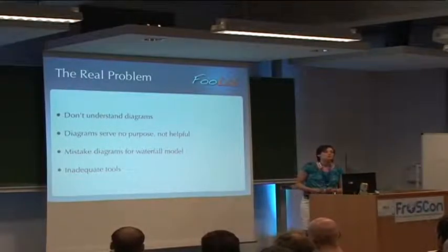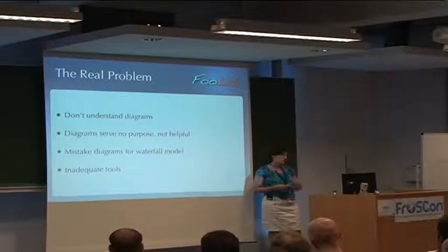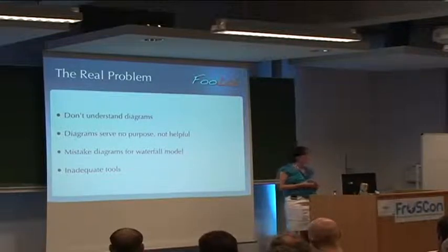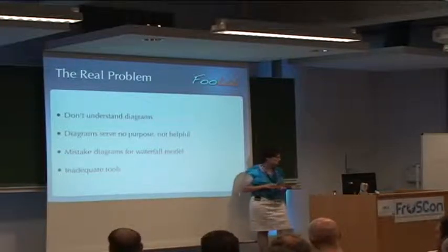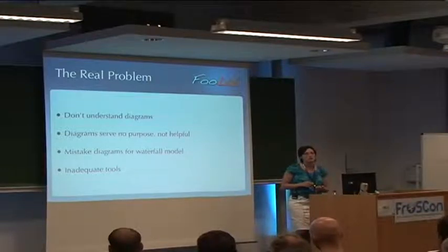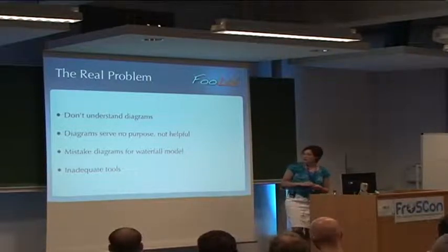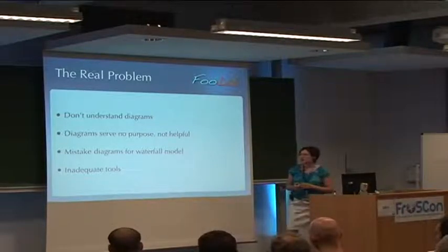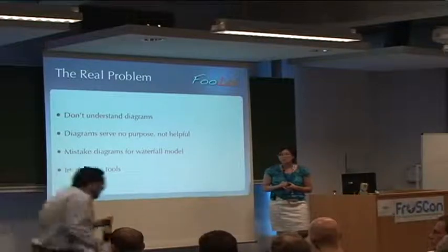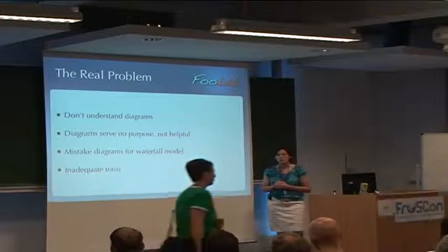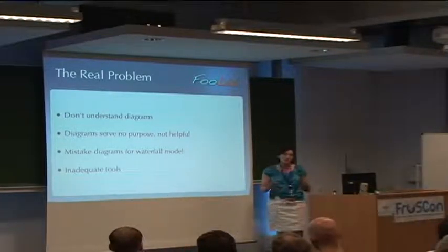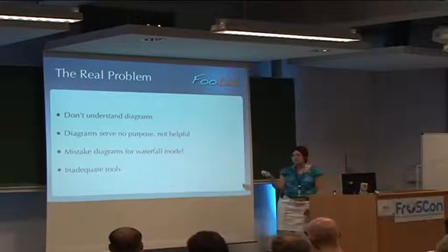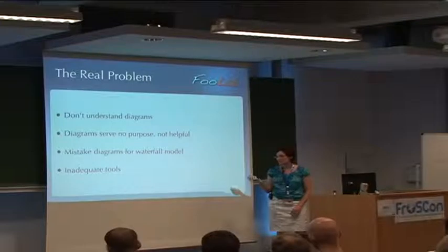So the real problem why people do not write documentation is because they don't understand the diagrams. People don't know. They serve no purpose. They're not helpful. They're just there to exist and they're not helping us write the code. And also people mistake diagrams for the waterfall model. As I mentioned about lean and mean, a diagram doesn't mean that you have to have a very linear process and then you cannot go back in time. It can be very dynamic. And also people often have inadequate tools, which they fight against. And because of that, they waste a lot of time. It gets frustrating. And because documentation is already difficult to start with, having inadequate tools doesn't help. And also sometimes the wrong people will choose those tools. So the developers will not enjoy using them.